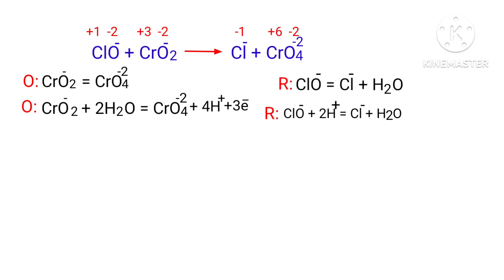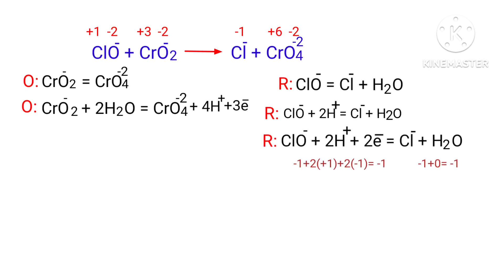Now balance the charges in the reduction half reaction. Both sides are not equal, so add 2 electrons to the left side to make it equal to -1. Now the charges are balanced in the reduction half reaction.